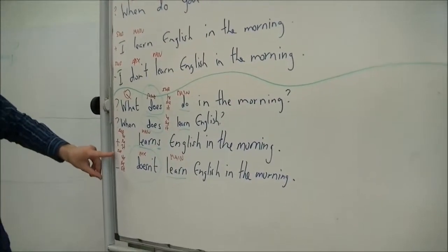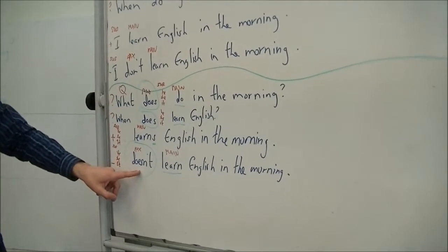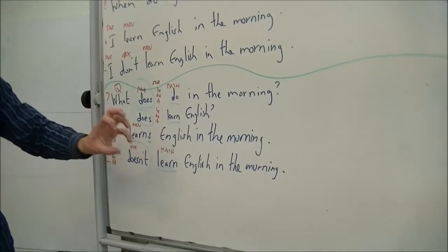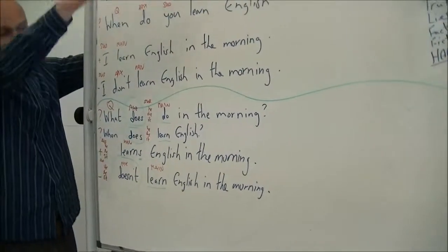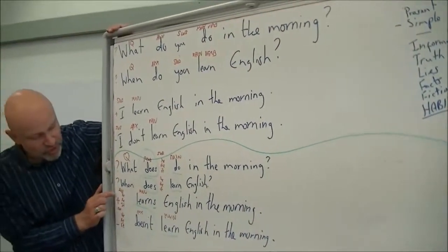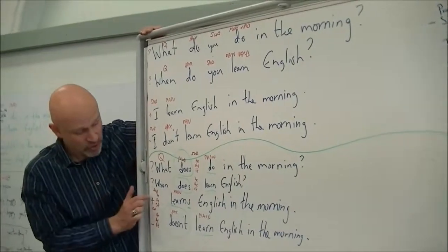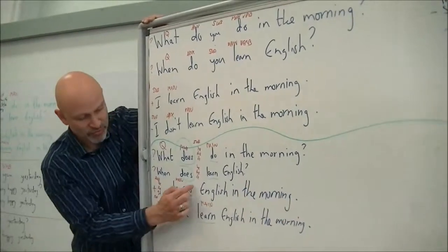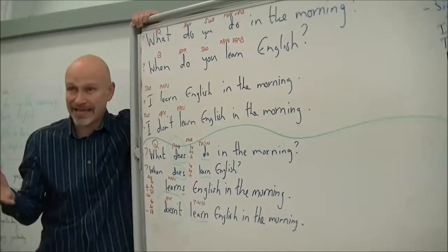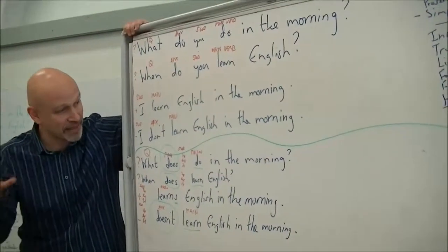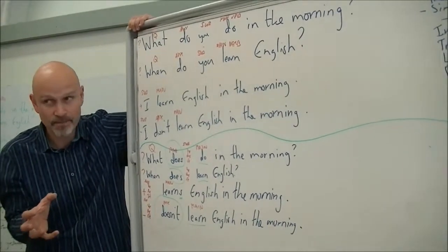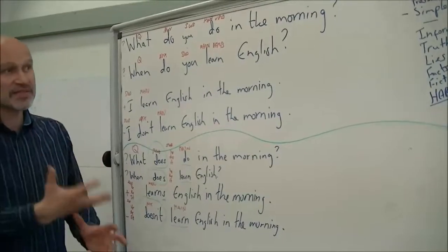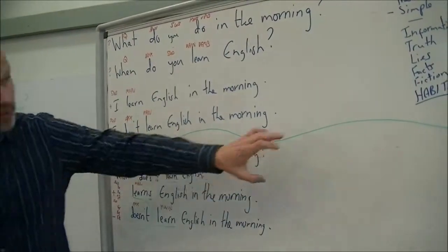That's exactly the same for the third person. When you ask a question, it's the auxiliary verb that changes, and the main verb stays present simple first person. The same for negatives — even if it's he, she, or it. It's the auxiliary verb that changes, and the main verb stays present simple first person. The only change is with the third person in the positive, where we say 'she learns English in the morning' — with an S, or sometimes ES, or sometimes IES, depending upon what you're trying to say.